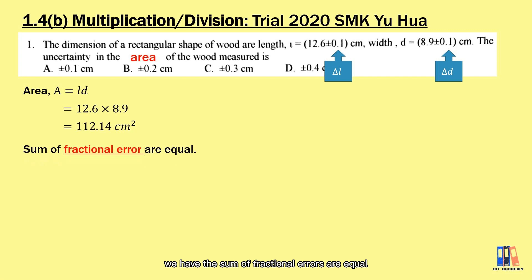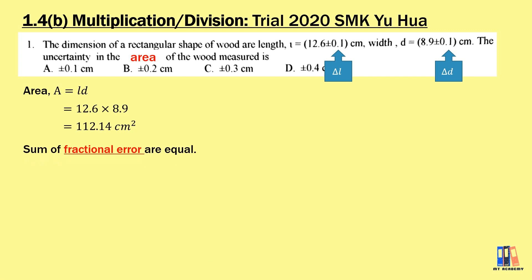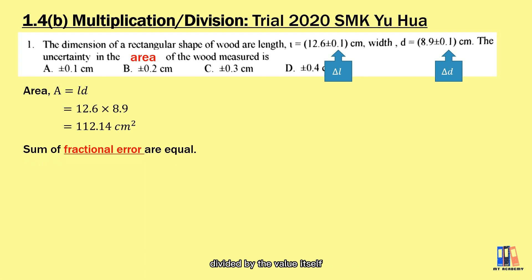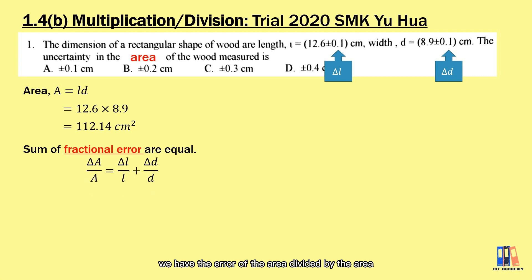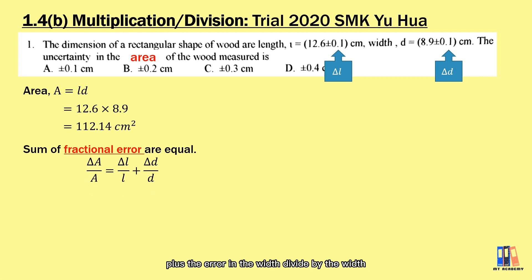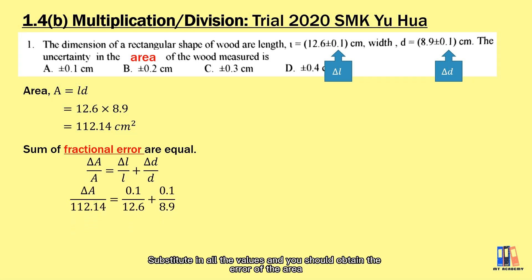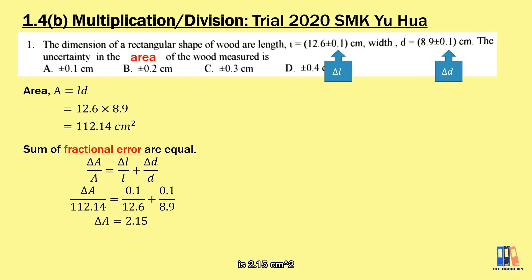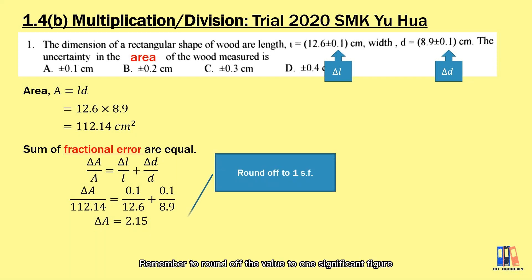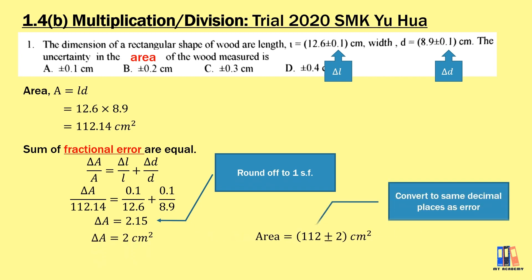For the uncertainty, the sum of fractional errors applies to data derived through multiplications or divisions. The fractional error is calculated by the formula: uncertainty divided by the value itself. In this case, the error in the area divided by the area equals the error in the length divided by the length, plus the error in the width divided by the width. Substituting all values, you should obtain the error of the area equal to 2.15 cm². Remember to round off to one significant figure, so the error of the area is 2 cm².